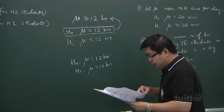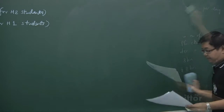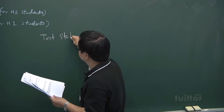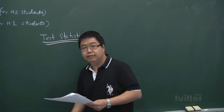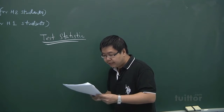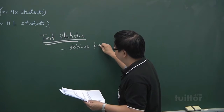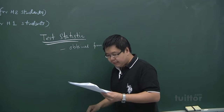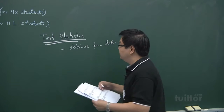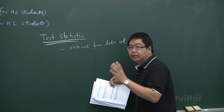Now let's look at some more important definitions before you do your hypothesis testing. The first concept is the test statistic. After studying the hypothesis statements, we move on to the term test statistic. A test statistic is defined as the value obtained from the data set, which is compared with the statistical distribution to determine whether the data set differs from what is expected under the null hypothesis. It depends on what you obtain from the sample and is used to determine whether the null hypothesis is true or false.